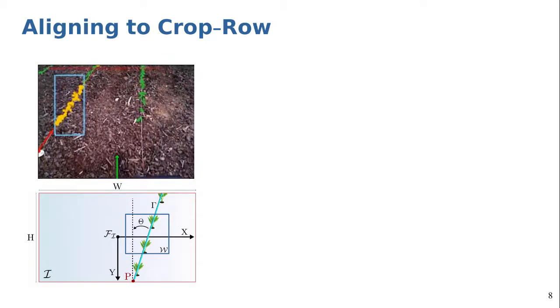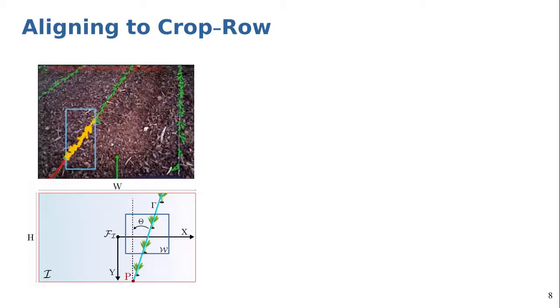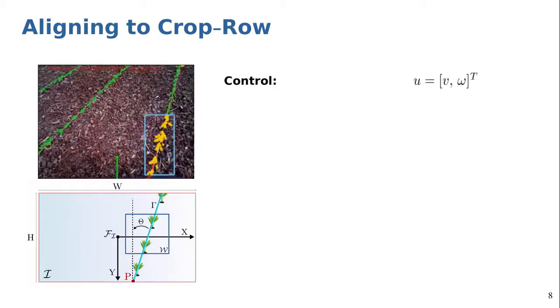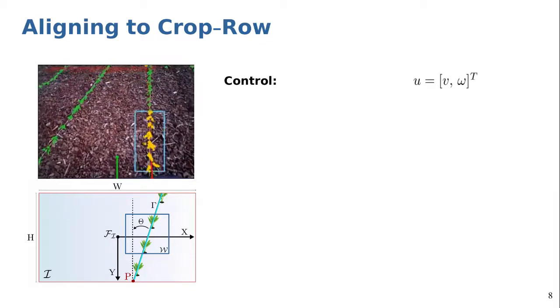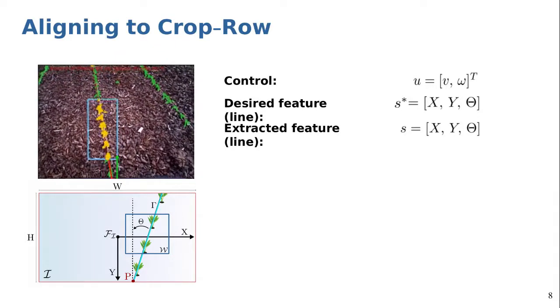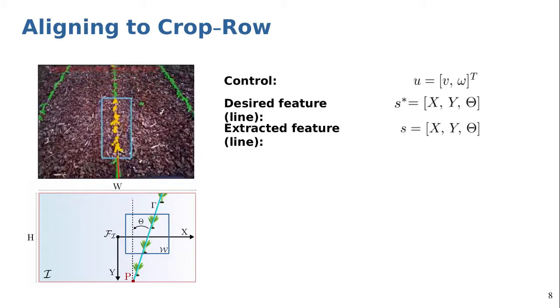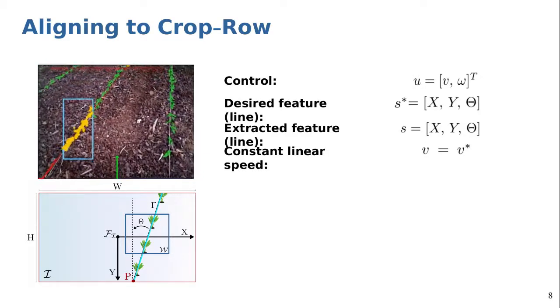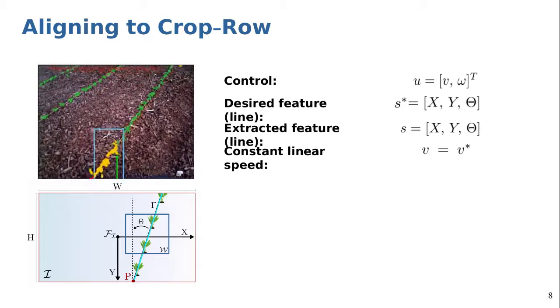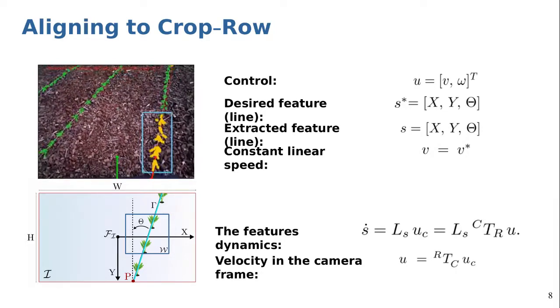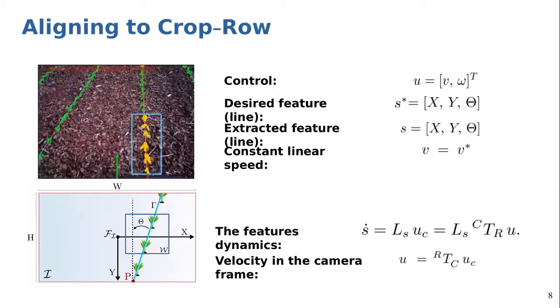We use visual servoing method to align the robot to the curve extracted from the desired crop row. This method computes control parameter u based on the error between desired features s* and extracted features s. Also v is imposed to keep linear velocity constant and only control angular velocity omega, which then the feature dynamics can be computed using interaction matrix and the map of the feature's movement from camera to the robot's frame.